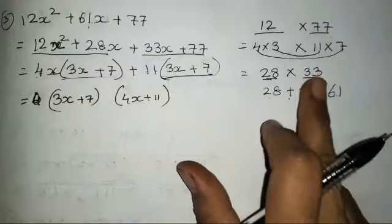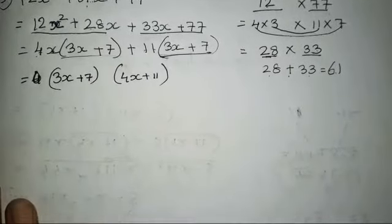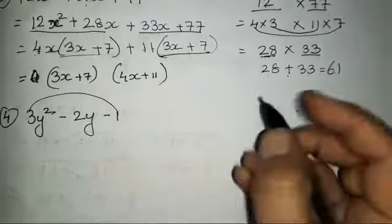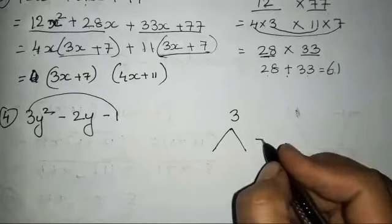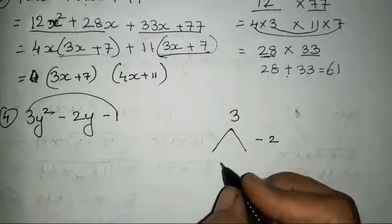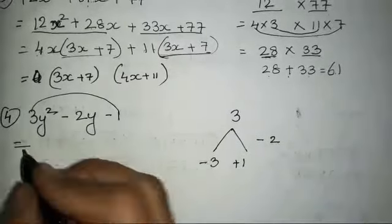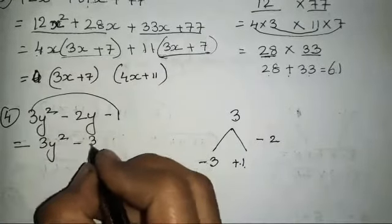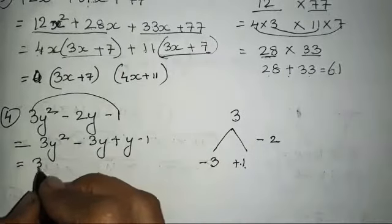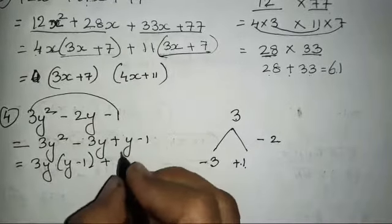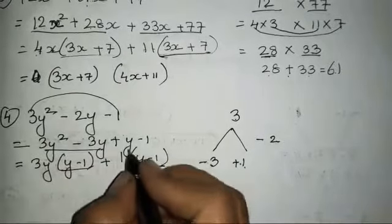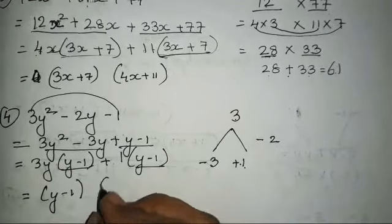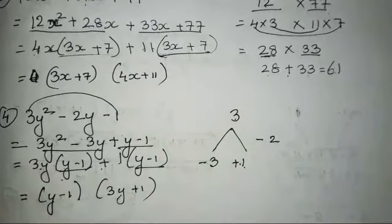If you are not able to understand this step, please let me know in the comment section. Now the fourth one is 3y² - 2y - 1. Again, 3×1=3, split it in such a way that you will get minus 2. So 3×1=3, minus and plus, giving you -3+1=-2. So: 3y² - 3y + y - 1. Taking 3y common: 3y(y-1), and taking +1 common: +1(y-1). So the common bracket is (y-1) and 3y+1 is going to be in the second bracket.